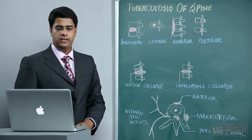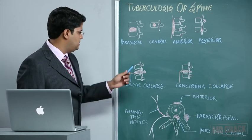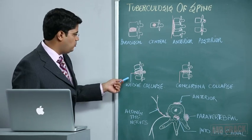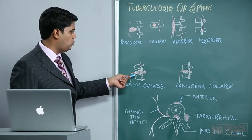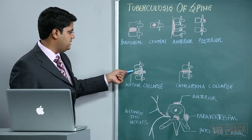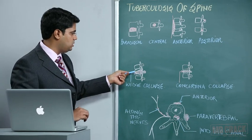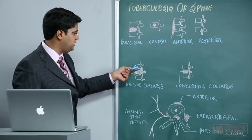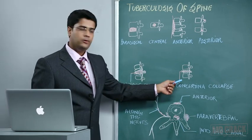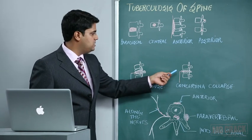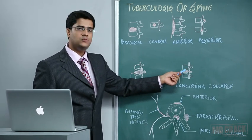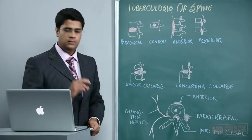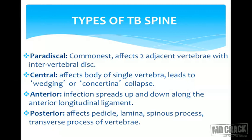In the paradiscal type, the two adjacent vertebrae are most commonly affected. In the central type, it causes wedging or concertina collapse — the wedge collapse shows anterior compression where thickness anteriorly is drastically reduced compared to the posterior aspect. In concertina collapse, there is circumferential, uniform reduction in size. The anterior type spreads above and below the anterior longitudinal ligament, while the posterior type affects the pedicles, laminae, spinous process, and transverse process.